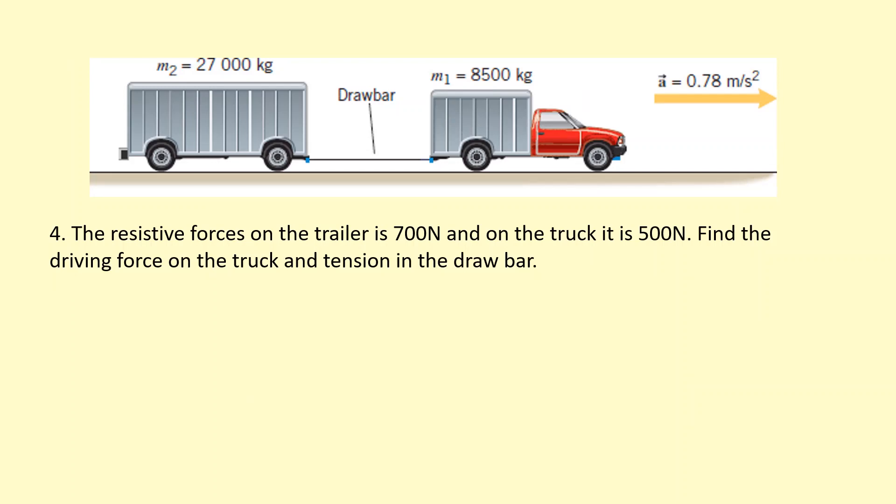In this question we have two objects: a truck which is pulling the trailer behind it. So we need to be careful not to get mixed up between the two objects. The resistive force on the trailer is 700 N, so that's this way, opposite to the direction in which the trailer is going. And the resistive force on the truck is 500 N, that's this way.